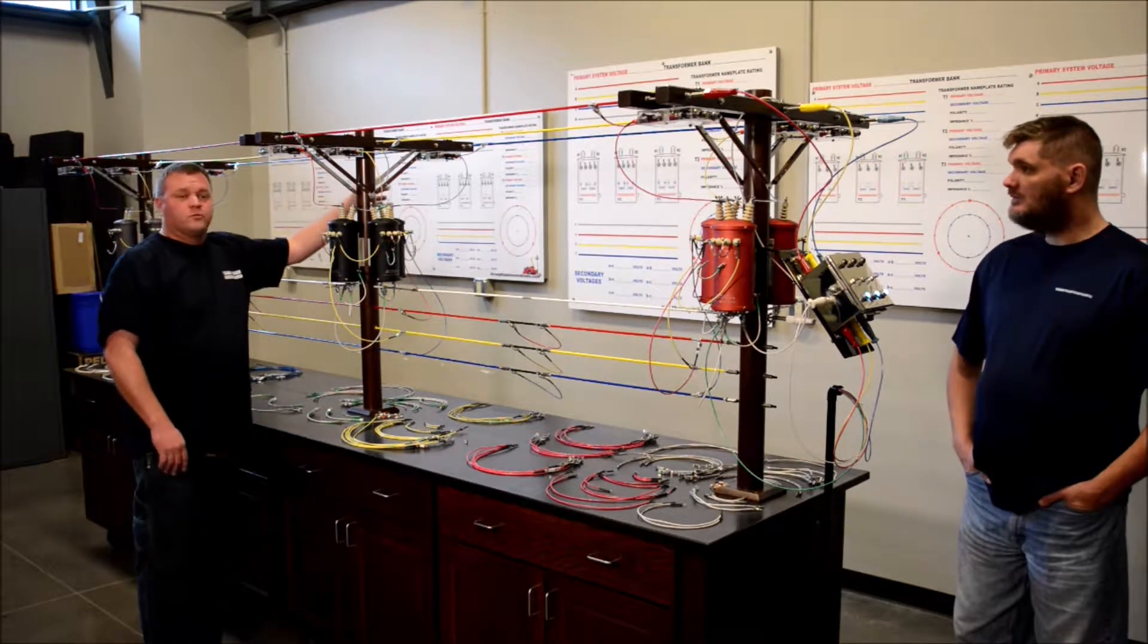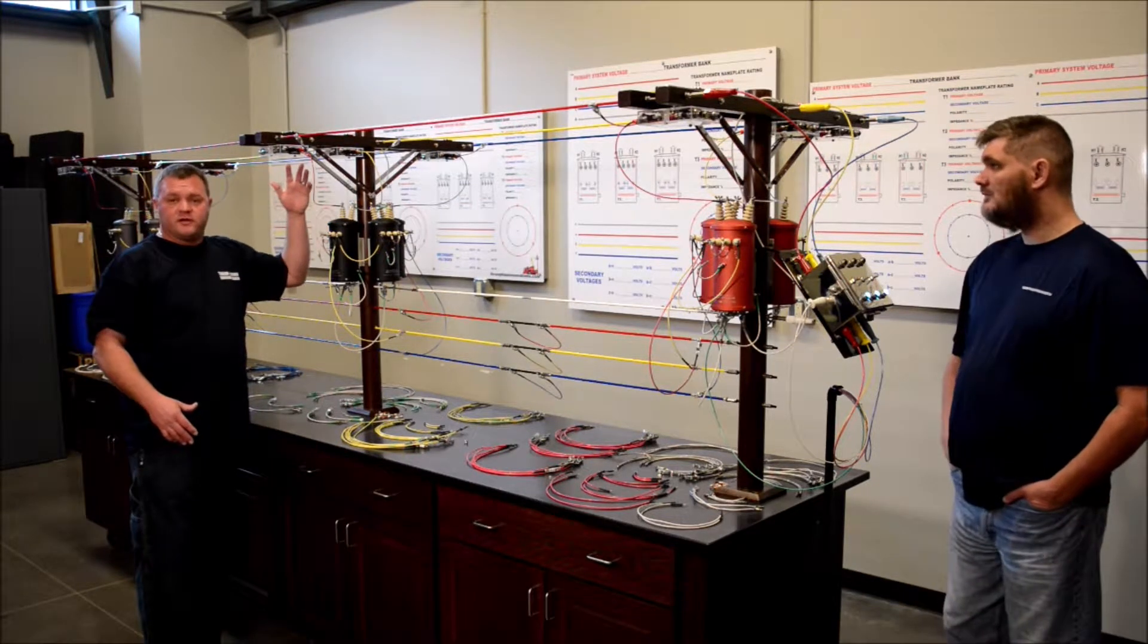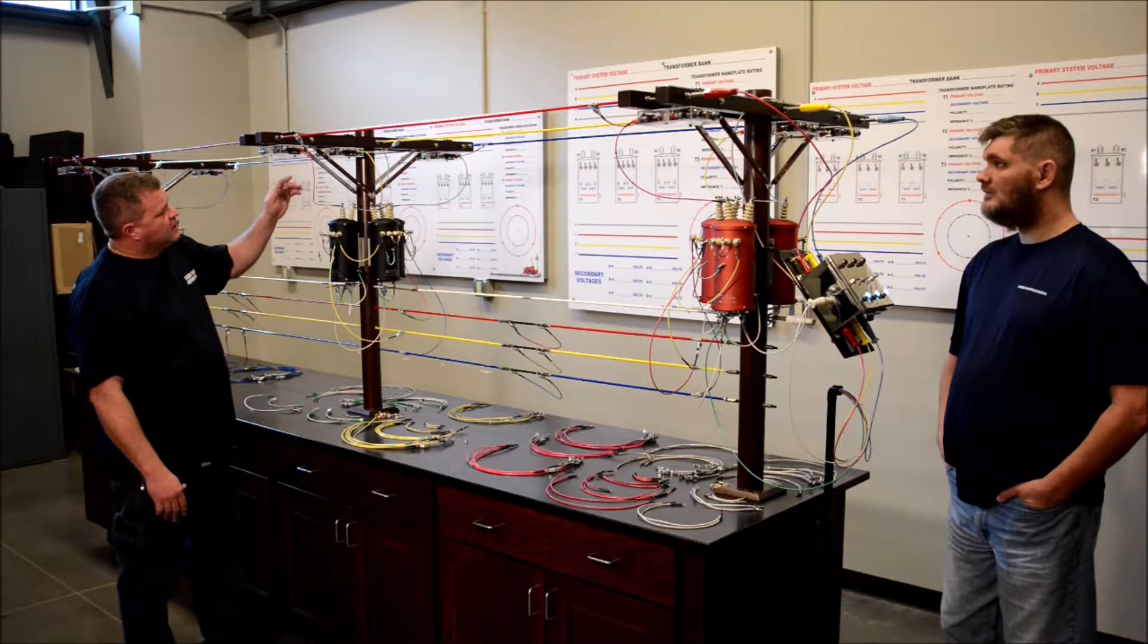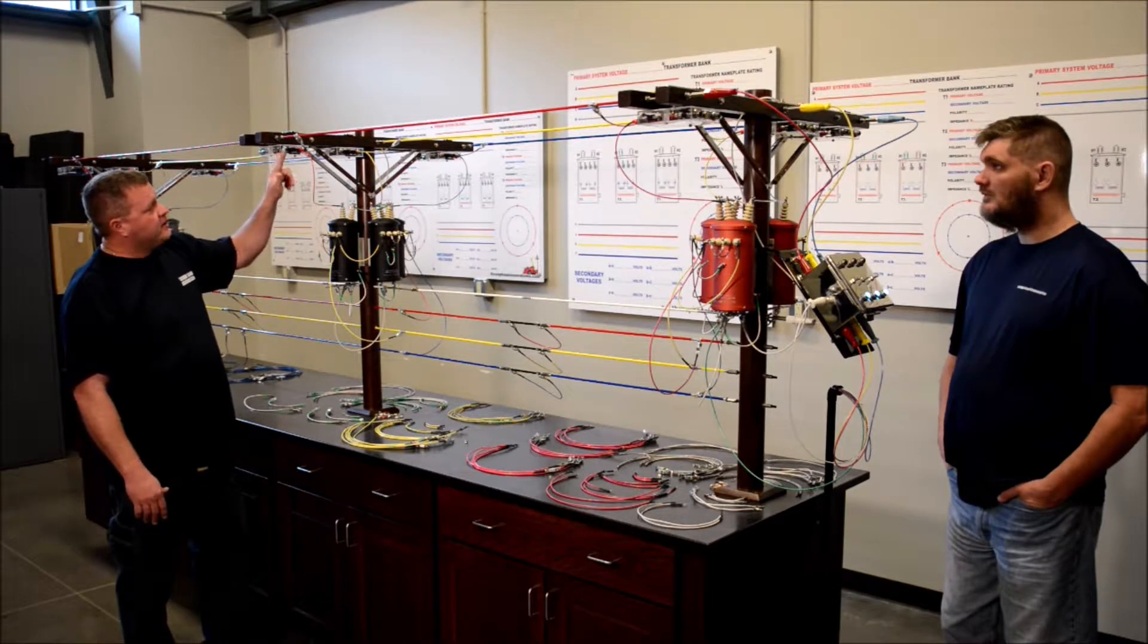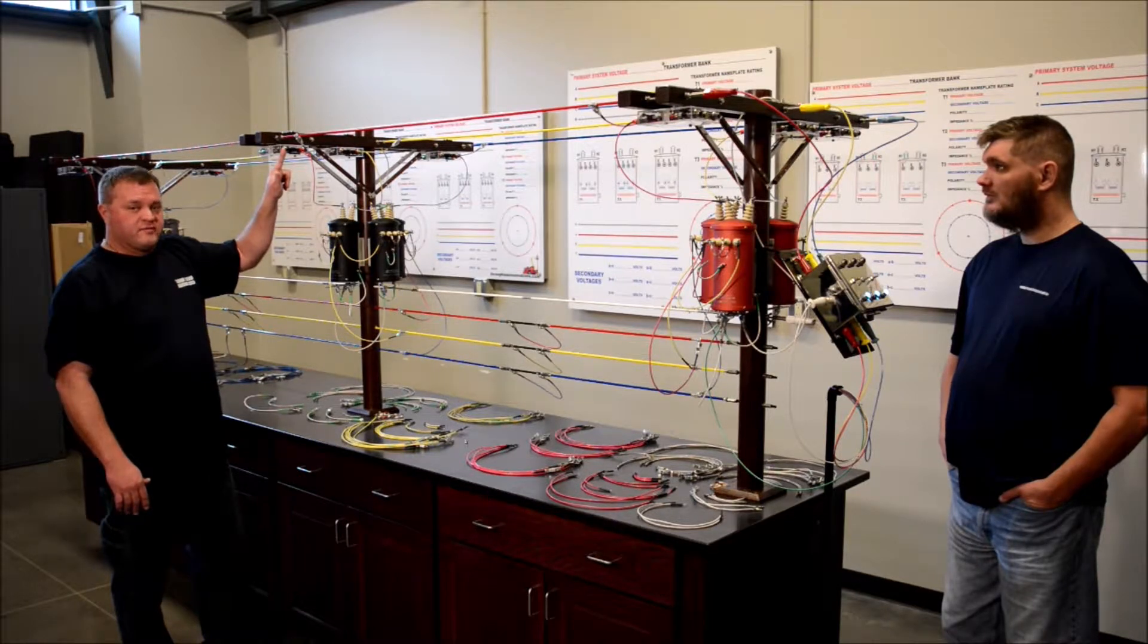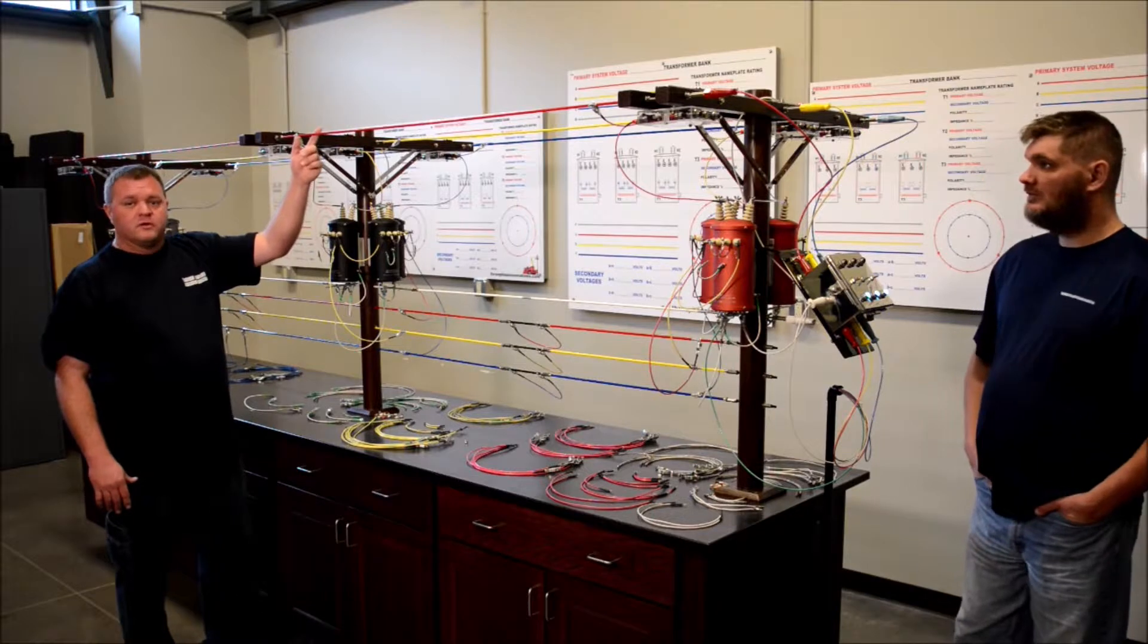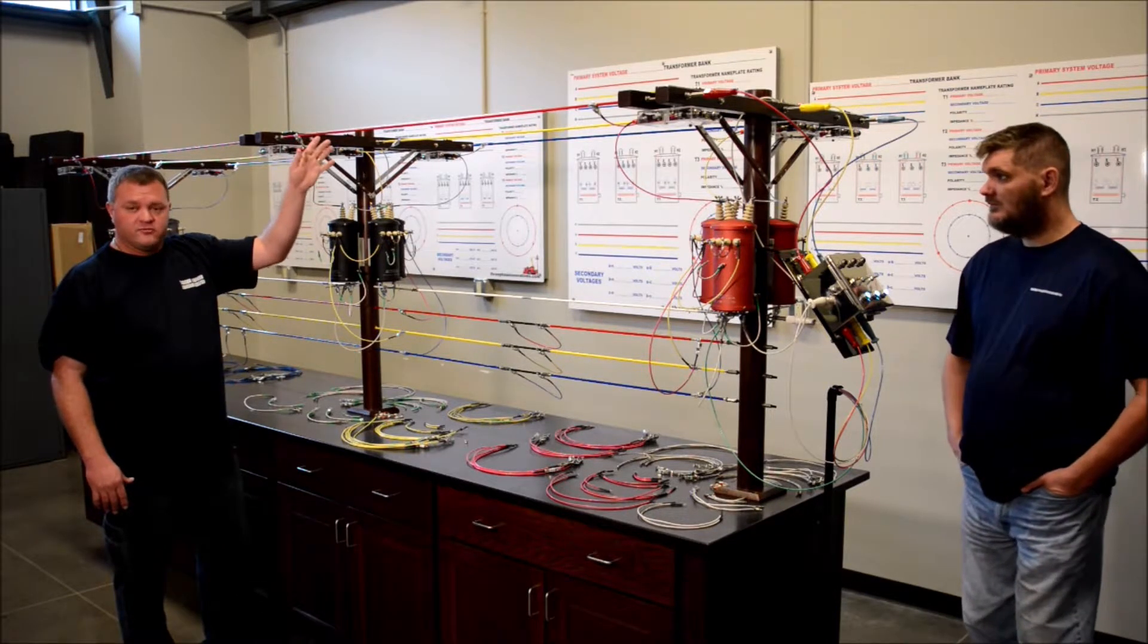Above each one of these transformers, we have single phase breakers. We treat them as cut outs on the line. On each one of these breakers, we've got red lights that indicate the breaker is either closed or is being backfed. And the green light indicates that there is power on the phase that actually feeds it.